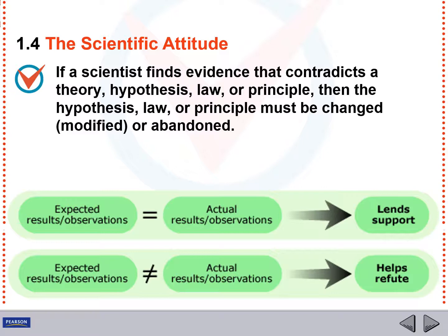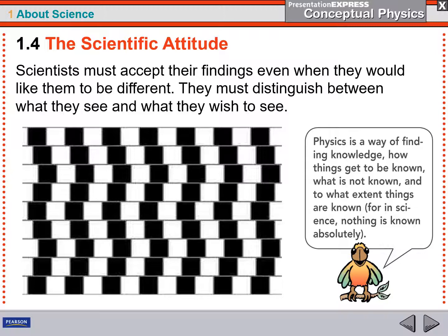So in science, what we try to do is take our observations and see whether or not they agree with what we thought we would see. If you find that your observations don't match what you expected, then you need to start rejecting that hypothesis and modifying that theory or abandoning it altogether. Scientists must accept findings even if you would like them to be different.